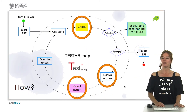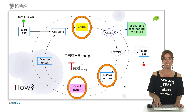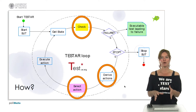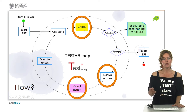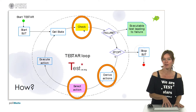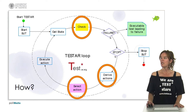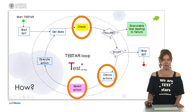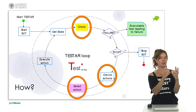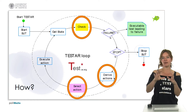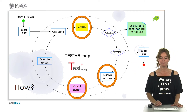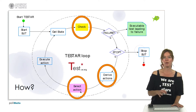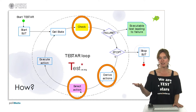If we remember the Testar loop, there are three positions where you can customize and improve the tool for your own system under test. First, you can check the state — which is basically the Oracle — where you can add customized oracles for other things you want to check for failures. Second, you can change the derivation of actions: maybe there's only a specific subset of actions you want to consider, or you can add custom actions not detected by the tool. Third, you can change how action selection is done — departing from random and picking any action selection criteria that fits your needs.